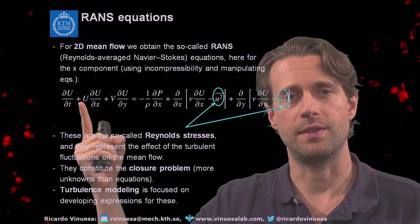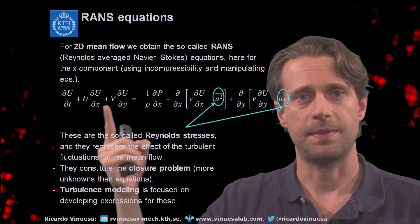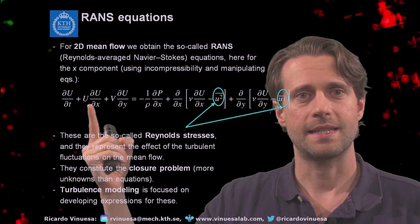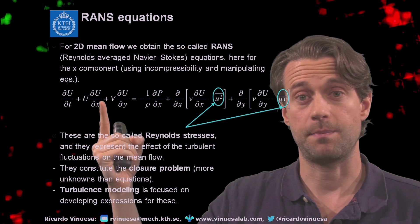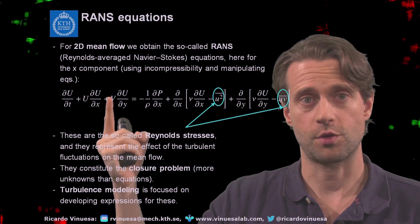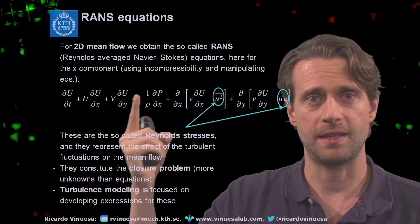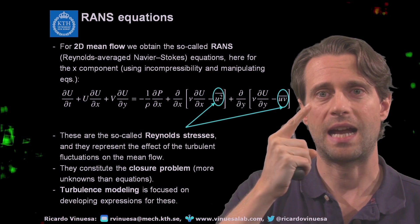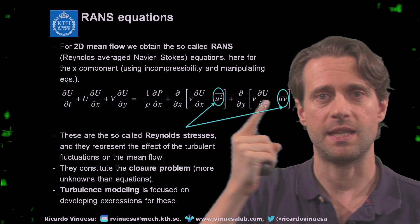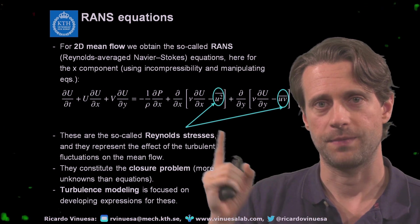If we manipulate the x-momentum equation using incompressibility and some algebraic steps, we end up with this equation over here. This equation is basically a PDE for the mean flow — for U, for V, for the pressure — except for two terms: u'² and u'v', which are time-averaged quantities.